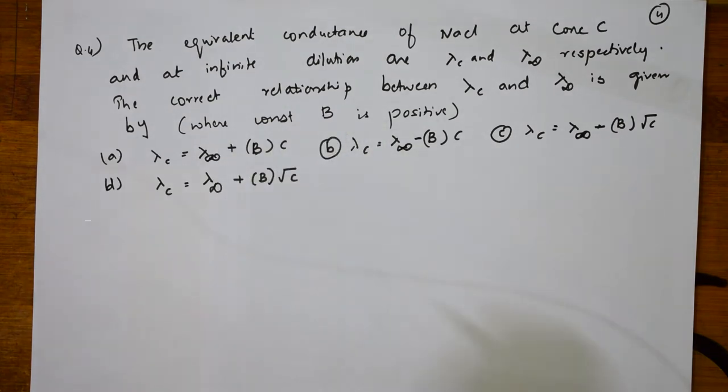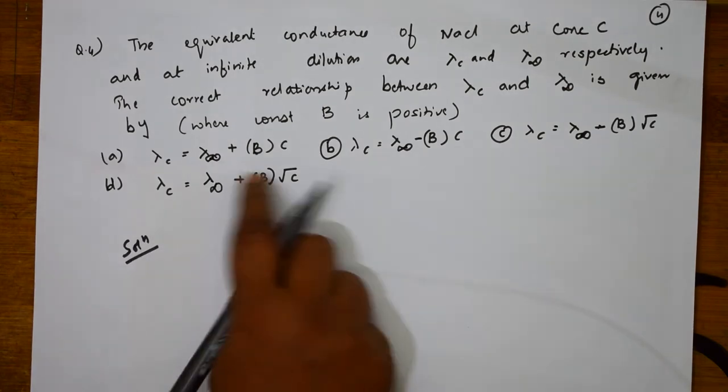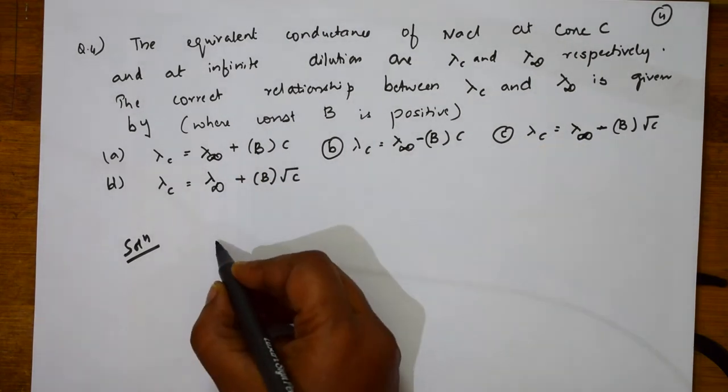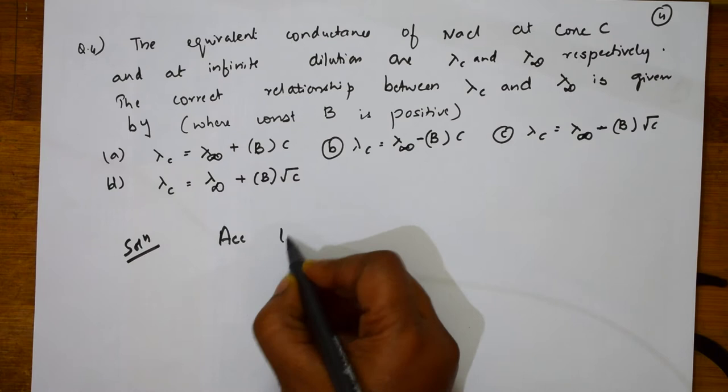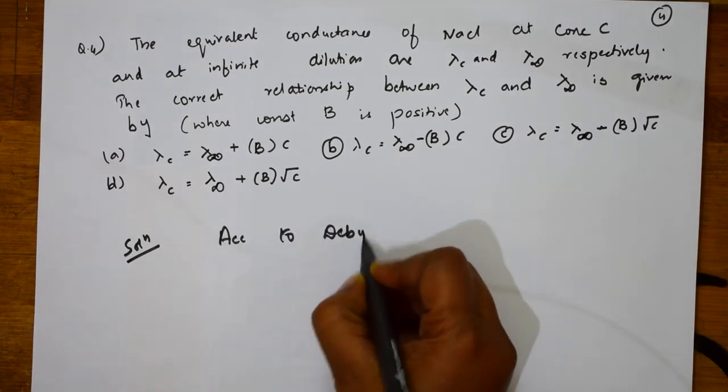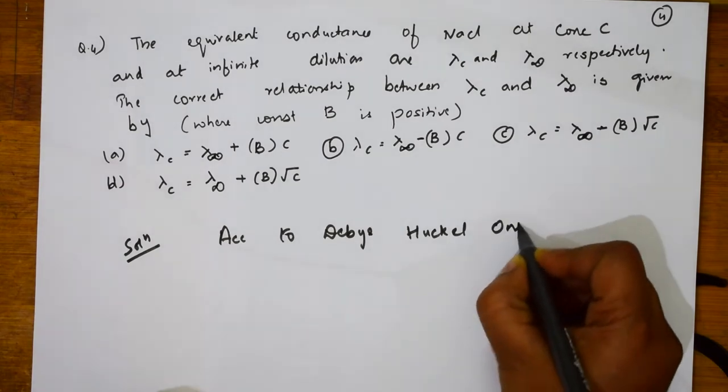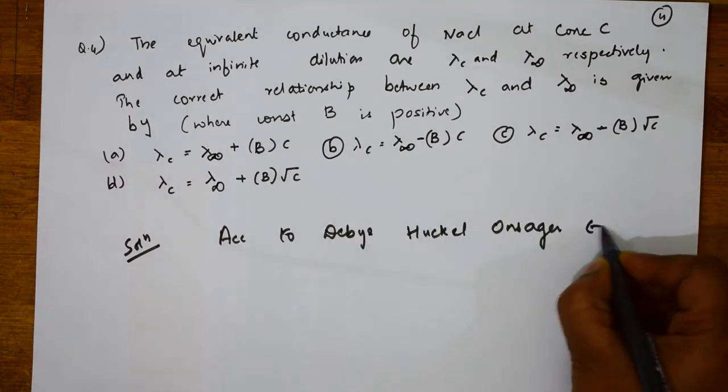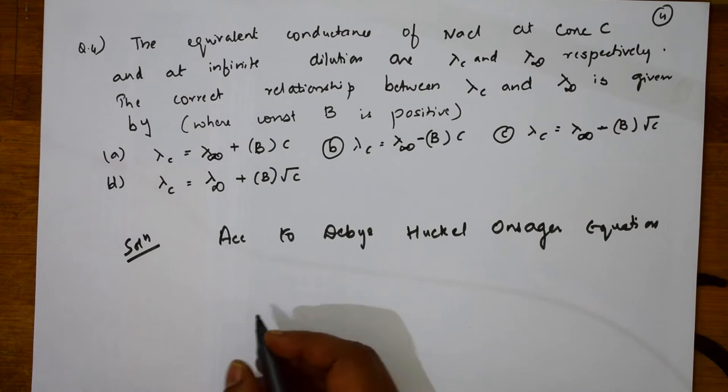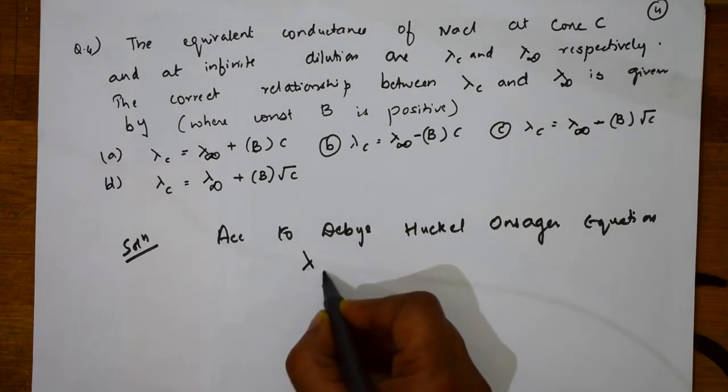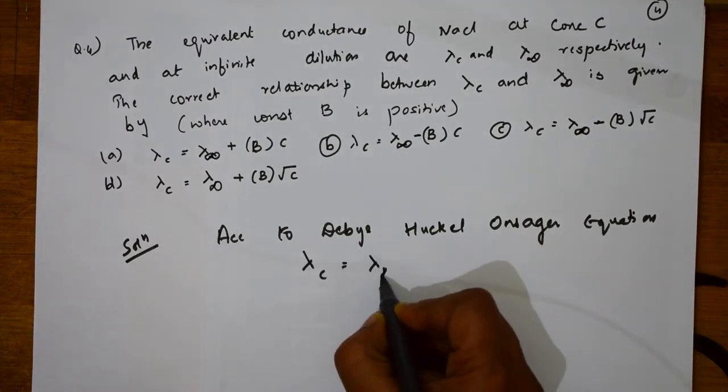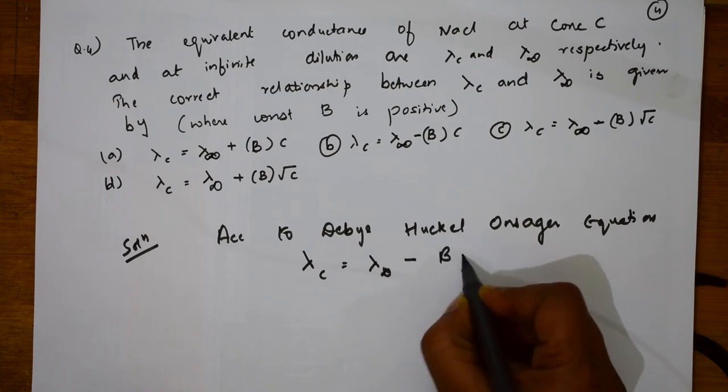Basically when I have to solve this, first important thing is this formula is related to your Debye Huckel Onsager equation. Let us write that. According to Debye Huckel Onsager equation, what is the formula we have learned? Lambda C is equal to lambda infinity minus B times square root C.